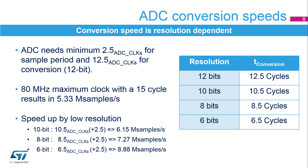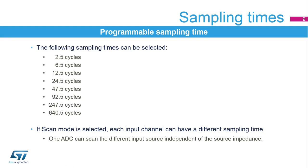For high-speed sampling, it is possible to reduce the resolution down to 6 bits, and then the sampling speed can go up to 8.88 megasamples per second. The sampling time can be programmed individually for each input channel. The sampling times listed in ADC clock cycles are available, and longer sample times ensure that signals having a higher impedance are correctly converted.